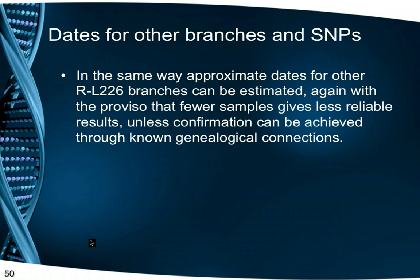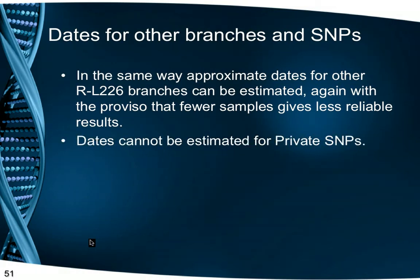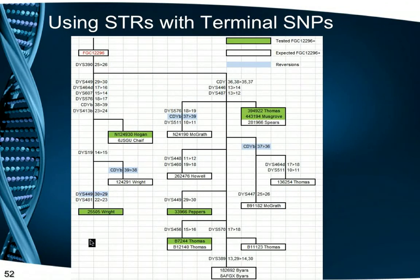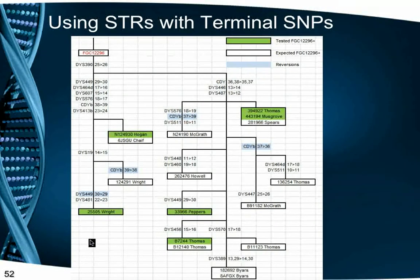In the same way, approximate dates for other L226 branches can be estimated, again with the proviso that with few samples, they give less reliable results unless confirmation can be achieved through known genealogical connections. However, estimating dates for a person's private SNPs cannot be achieved as we don't know which order they have emerged. Now that we have identified many of the terminal SNPs below L226, we can use STR mutations to further define the tree beneath each terminal SNP. Here we have a branch with six men confirmed as SNP FGC12296 and a further ten men expected to be FGC12296 based on their STR mutations, giving even greater granulation than just looking at SNPs.